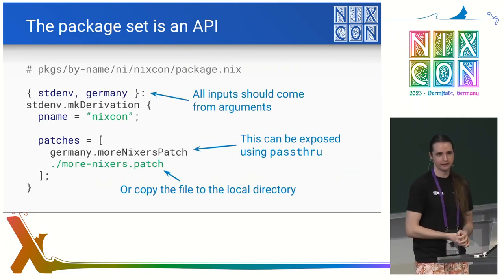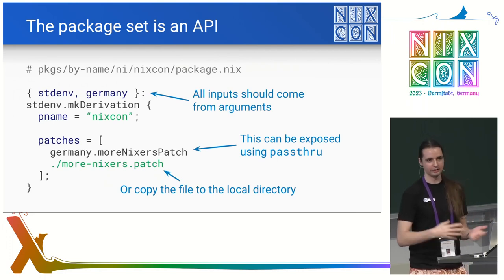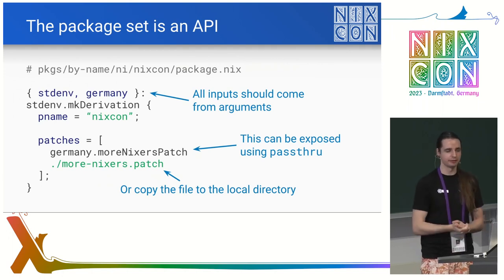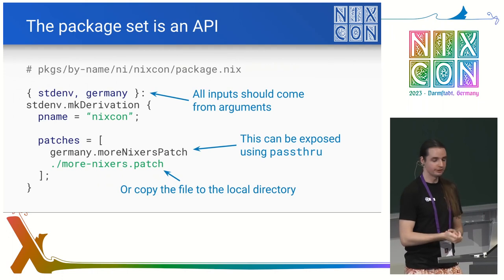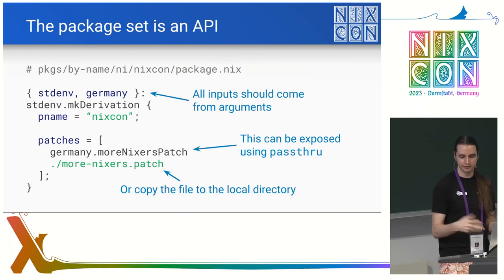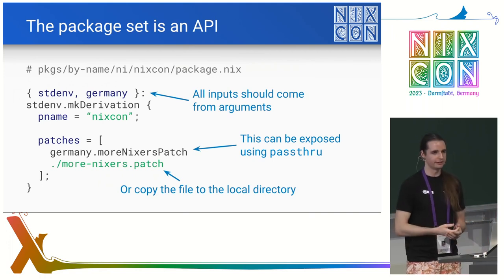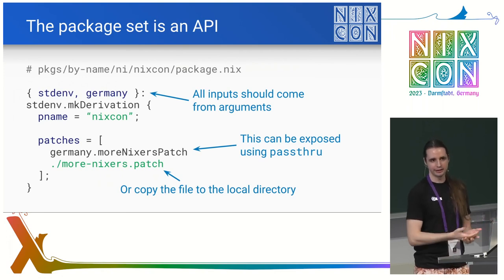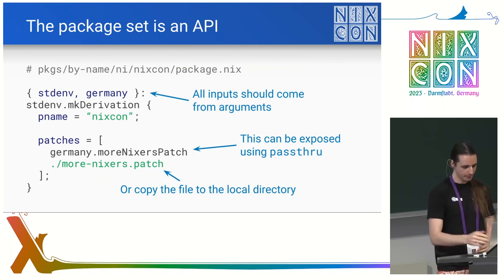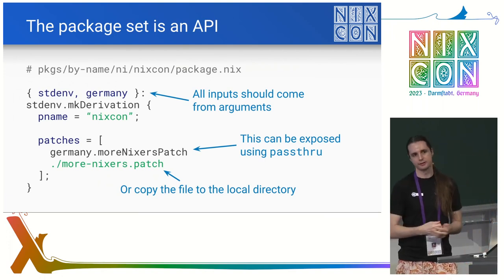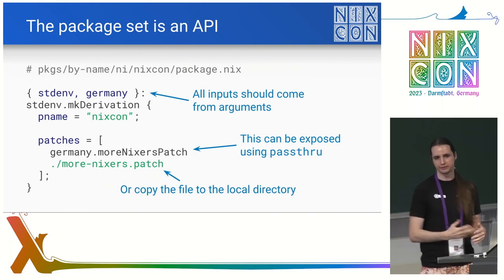What should you do instead? Similar to flakes, you'd want to take all of your inputs as arguments. So if you have a package and you depend on something from another package, take it as an argument. And you can use a passthru attribute to expose something from a package that you want to be reused. This gently enforces an API surface — establishing a better API surface in Nixpkgs — which I think is a pretty good step. You could also just copy the files locally; this sometimes makes sense, for example with patches.